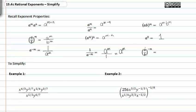If you have a fraction raised to a negative exponent, you simply flip the fraction over and change the sign of the exponent.